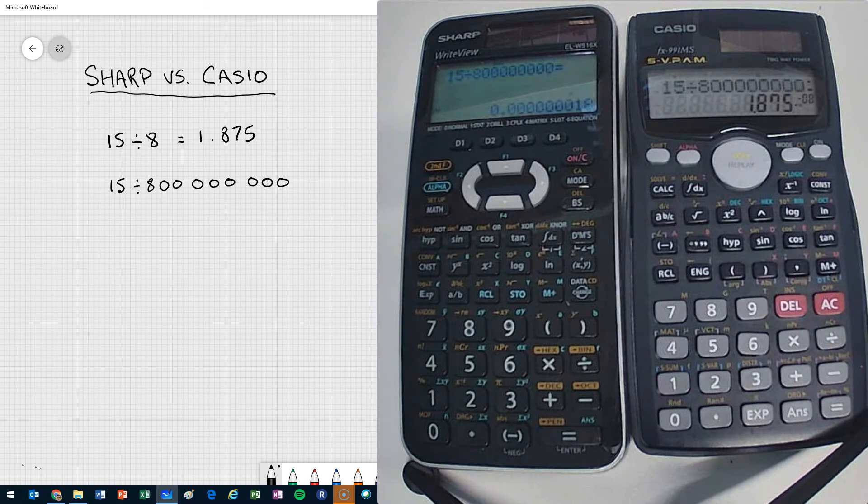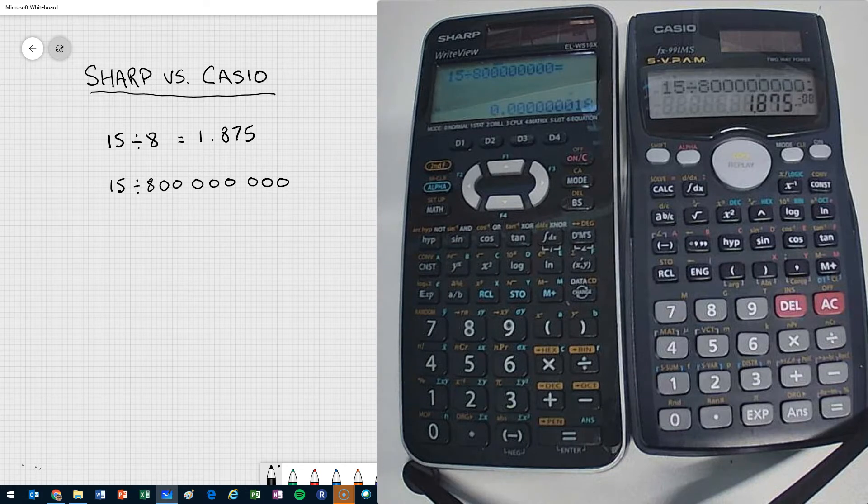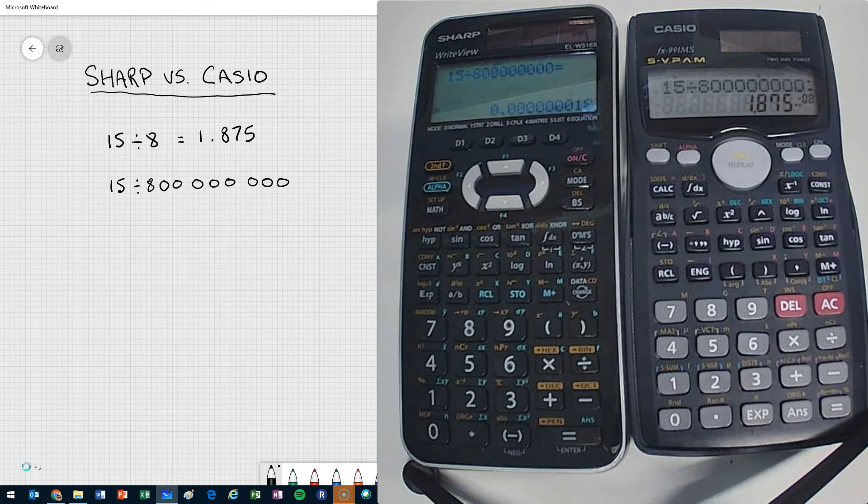So first of all, what you'll notice is that the SHARP will give you an answer not in scientific notation. And we're pretty close. So it tells you 0.00000018 versus the CASIO, which gives it to you in scientific notation by default.